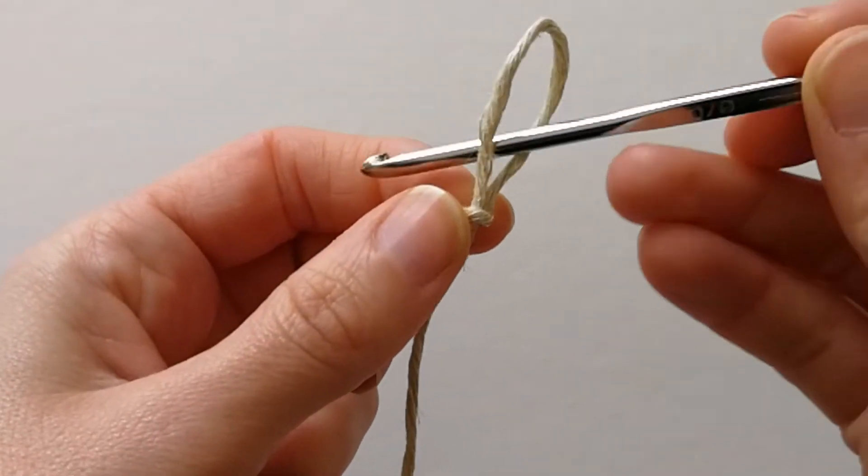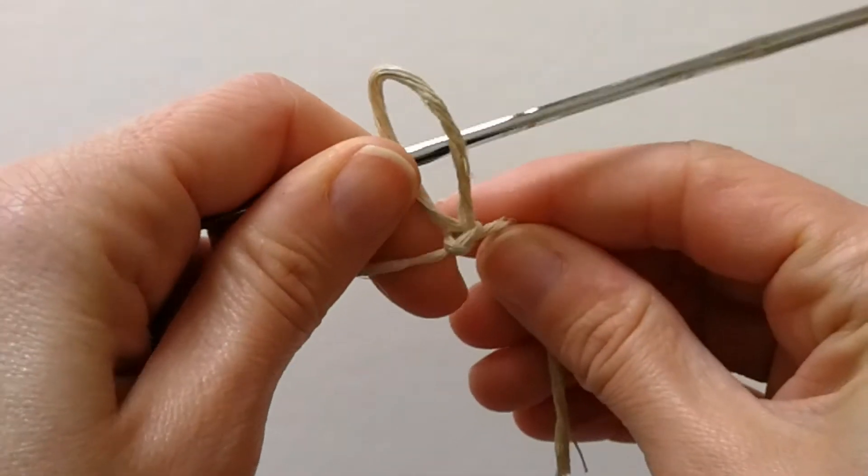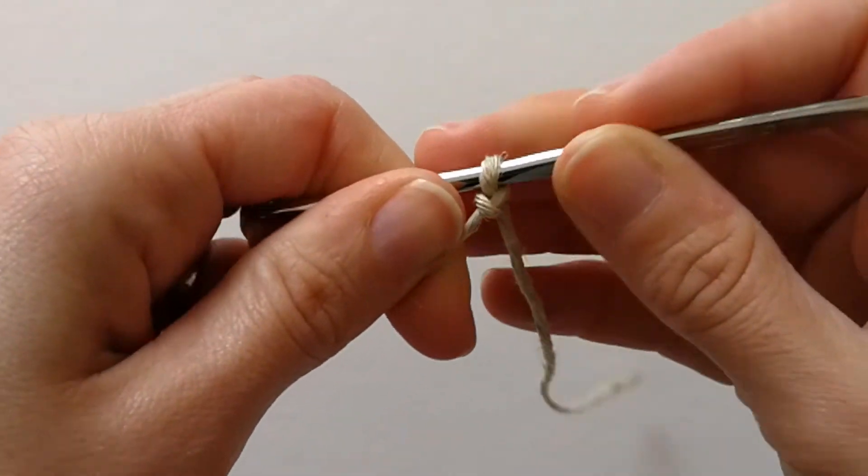That's it! You have a slipknot. Now put your hook through the loop and pull the end to secure it.